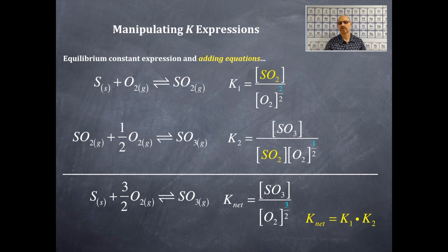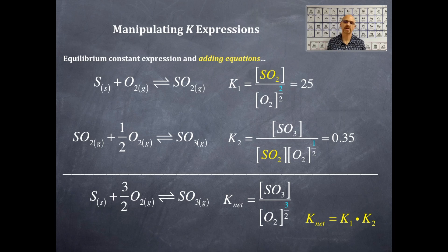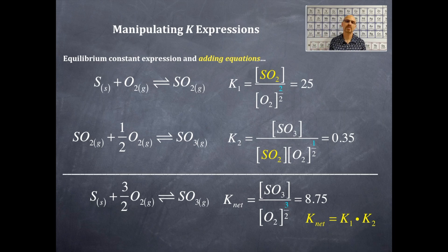To get the net K, you multiply K1 times K2. When you add up equations, you multiply the Ks to get the K net. K1 is 25 and K2 is 0.35, so 25 times 0.35 equals 8.75.